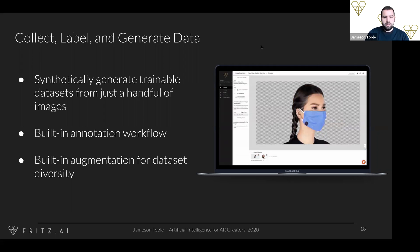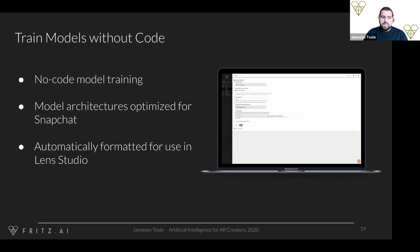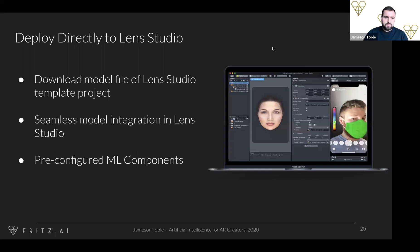Once you've collected, labeled, and generated all your data, the next phase is training. With Fritz AI you can train models without code — you fill out a form, select the type of model you'd like to train based on your data, click a button, and we handle all the rest. The best part is that all of the models are automatically formatted so they can be dropped directly into Lens Studio, and we'll even generate templates for you. Once you've downloaded the model file or the Lens Studio template project, all you have to do is open it up, click a few buttons — we've pre-configured as many components as possible so you don't have to deal with the complicated ML side of things.